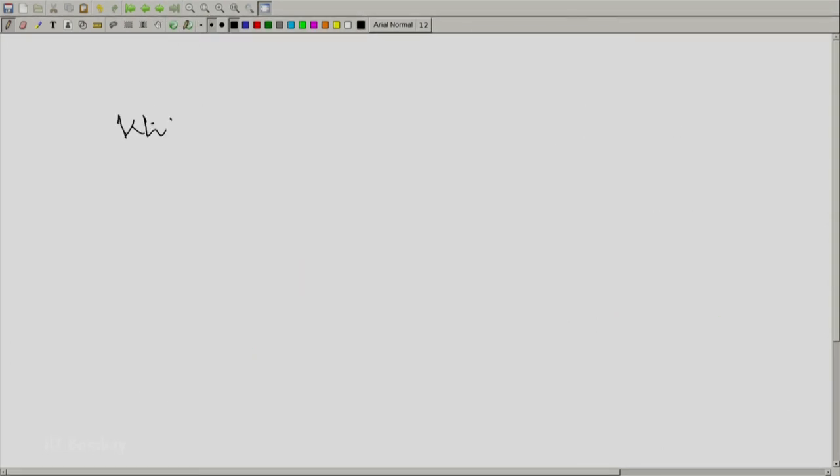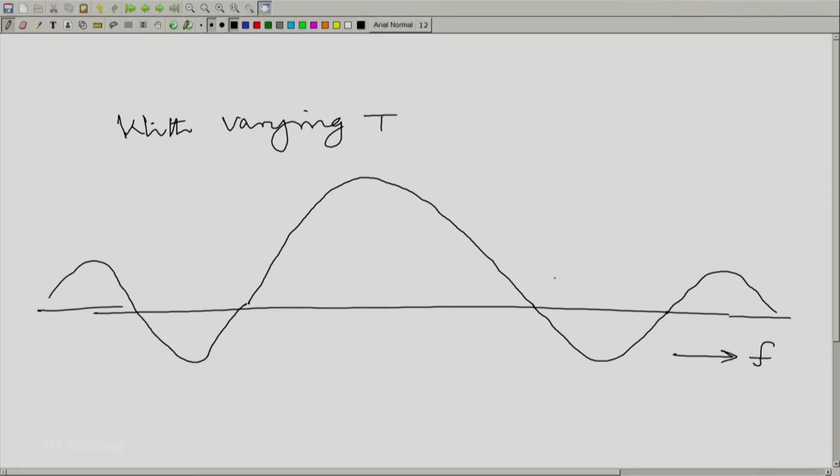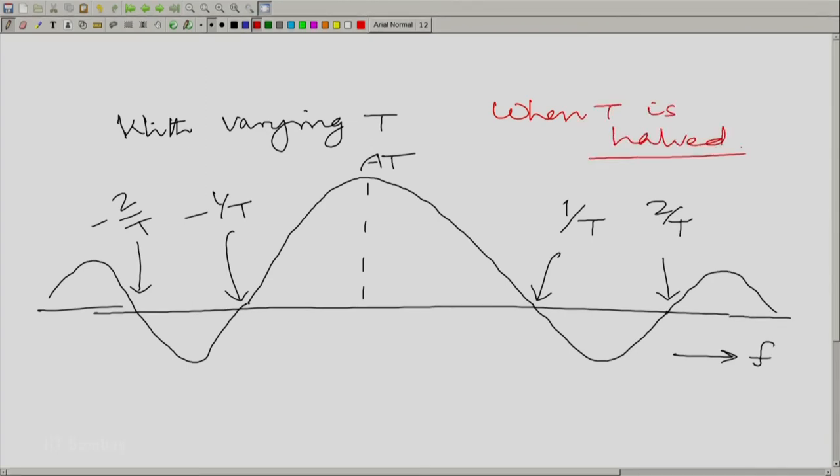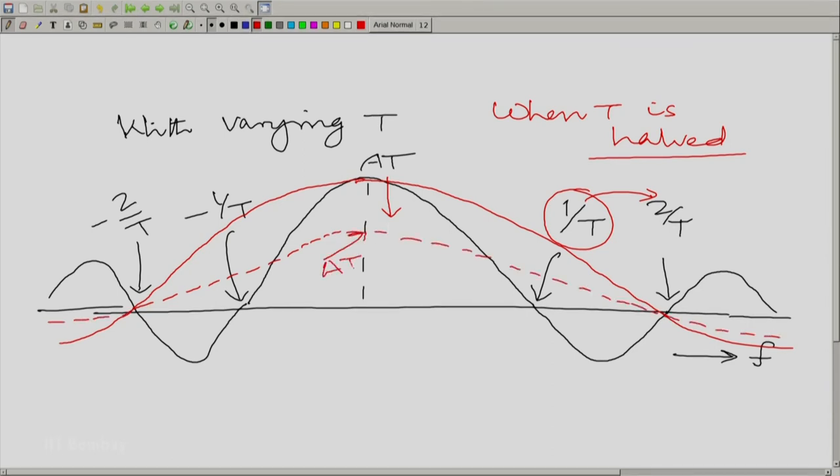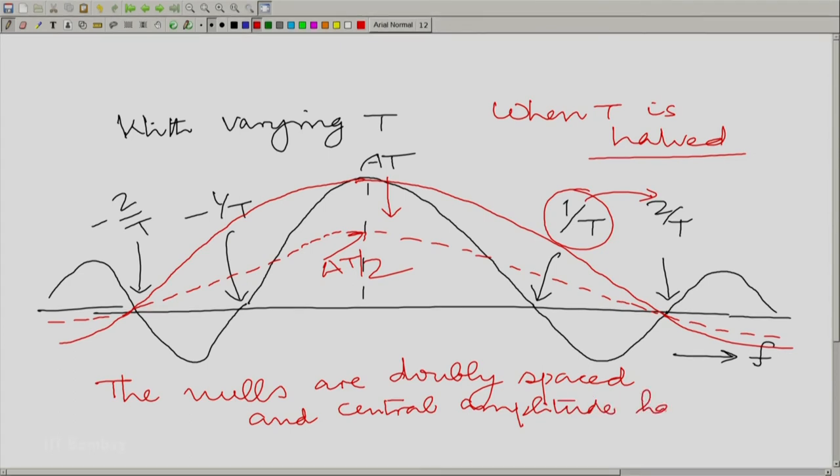What is more, if we look at the Fourier transform itself, let us see how it varies as T varies. Let me draw one for a certain T and then let me halve the T. Let us see what happens with a certain T. And now on the same graph, I will show what happens when I halve the T. If T is halved, this frequency is doubled. So this moves here. Moreover, this now becomes aT by 2. So in fact, this should also be brought down. Let me correct and draw the correct plot in a dotted form. What happens when we halve T? The nulls are doubly spaced and the central amplitude is halved.